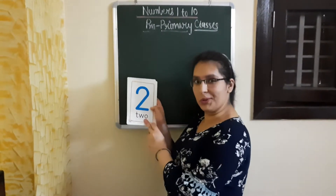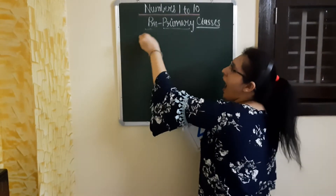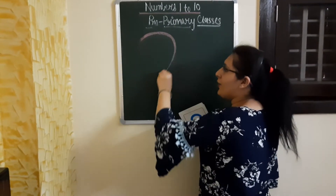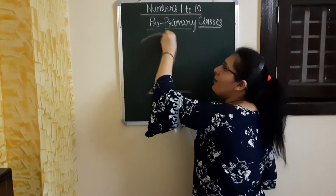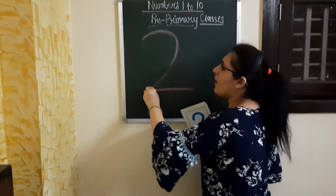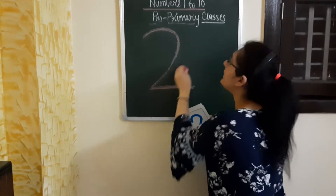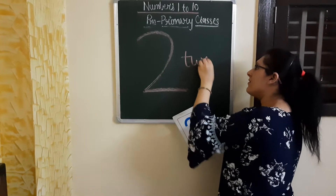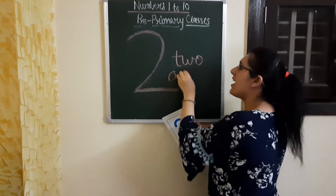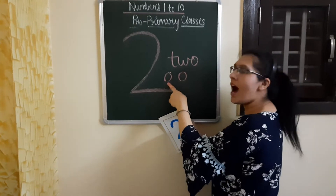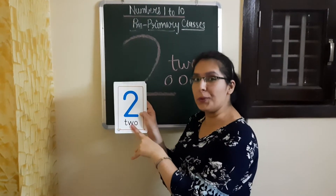Now comes number 2. So let us make it: outward we go and down we come. Outward we go and down we come. This is number 2. 1 and 2. This is number 2.